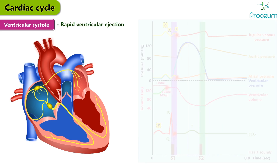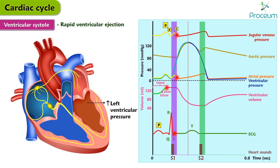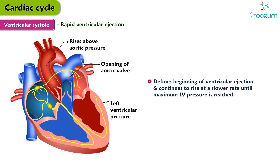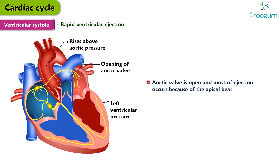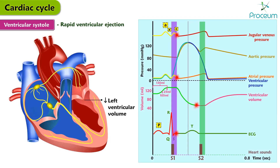Rapid ventricular ejection. By the end of isovolumetric contraction, the left ventricular pressure greatly increases and rises above the aortic pressure, resulting in the opening of the aortic valve. This defines the beginning of ventricular ejection, and pressure continues to rise at a slower rate until maximum left ventricular pressure is reached. In this phase the aortic valve is open and most ejection occurs. However, the aortic valve opening occurs after pulmonic valve opening, thus isovolumetric contraction is longer in the left ventricle. The left ventricular volume decreases rapidly then more slowly, and the aortic pressure rises rapidly, since the rapid ejection of blood into the aorta exceeds the drainage of blood into the peripheral arteries.